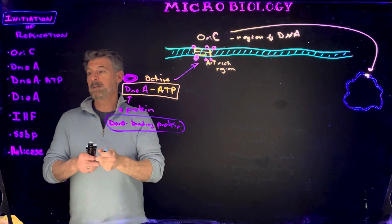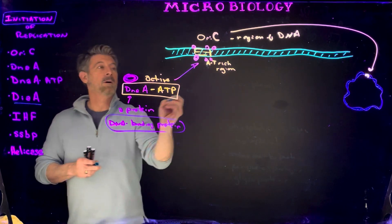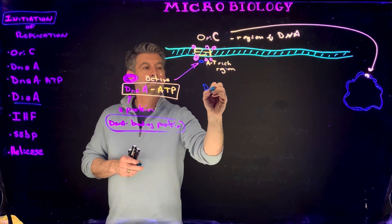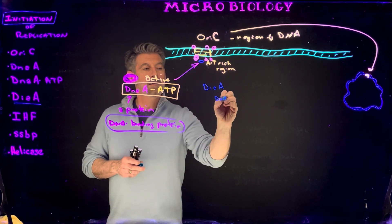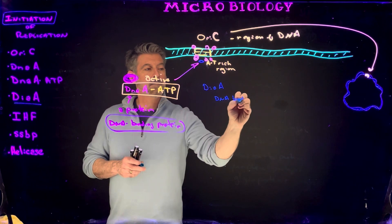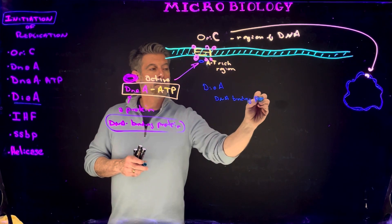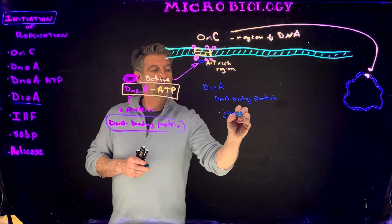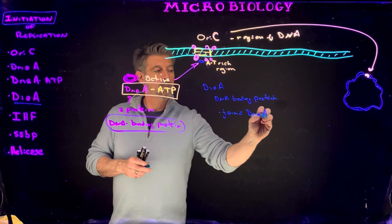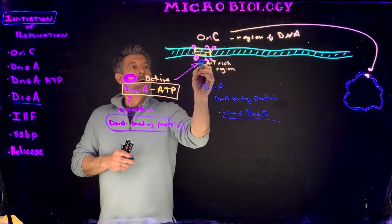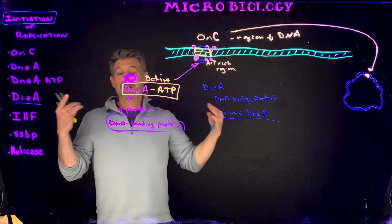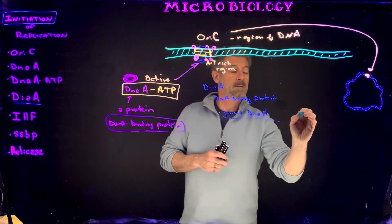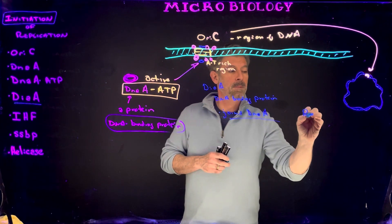Another protein called DiaA, another DNA binding protein, will join together DnaA molecules in a way that starts to form our replisome.